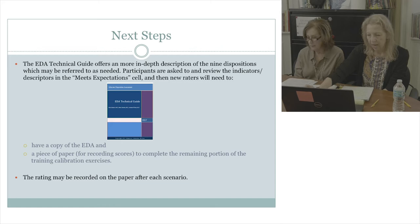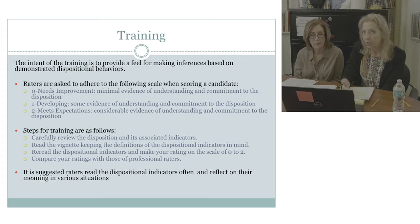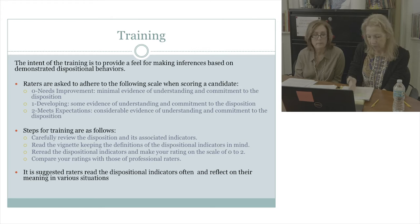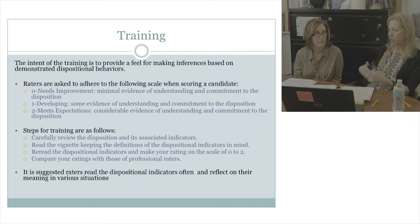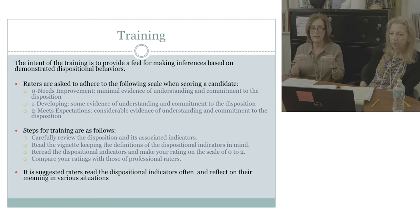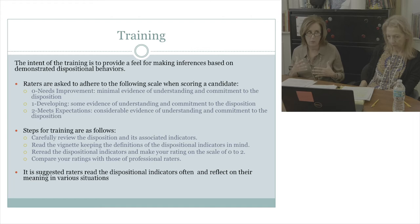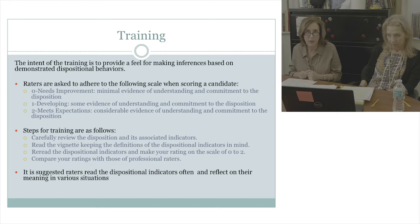Now we're going to hop into the actual calibration training. Remember that the Likert scale has three components: needs improvement, developing, and meets expectations. A helpful way to think about those three levels: two is great, no problem. One is teachable — you want to do something about it, you don't want to ignore it. Zero is actionable — what that action is depends on the severity or the egregiousness of the dispositional issue. So: actionable, teachable, great.